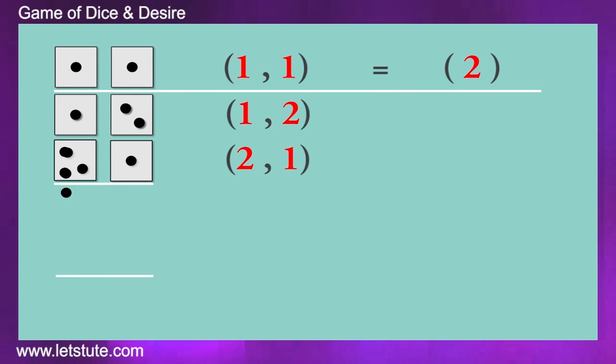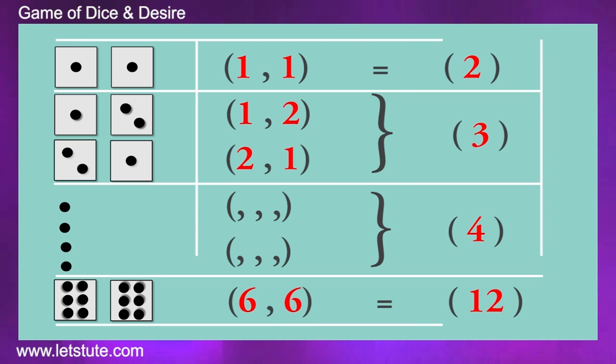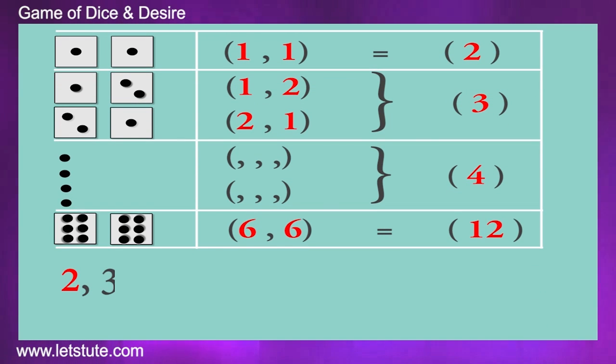So, the resulting numbers will be a minimum of 2, then 3, 4, till a maximum of 12. The numbers will be between 2 to 12. They cannot be less than 2 and more than 12.